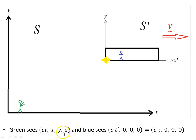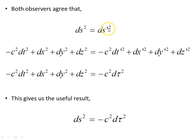The blue observer inside the spaceship sees the flashing light as not moving with respect to him or her, so the X, Y, and Z coordinates are 0. However, the light flashes in time, so the blue observer ascribes coordinates CT dash. T dash is the time measured by the blue observer who is at rest with respect to the flashing light — that is the proper time recorded by that observer. Both observers agree that dS squared equals dS prime squared. The spacetime interval is invariant; any two observers in relative motion will always agree that this is the case in special relativity.